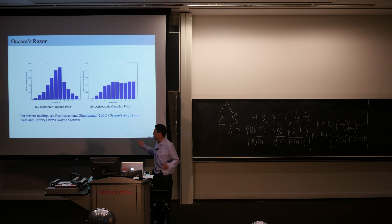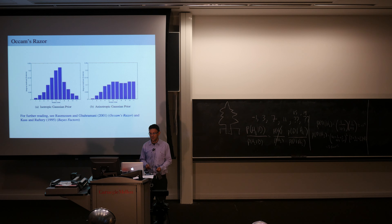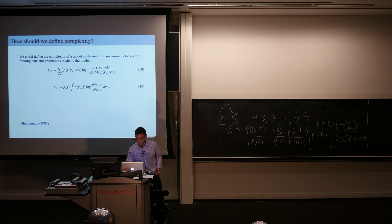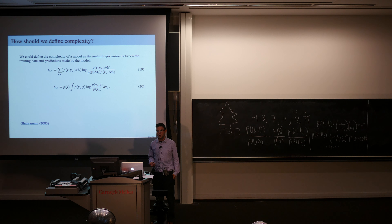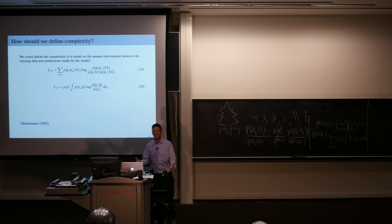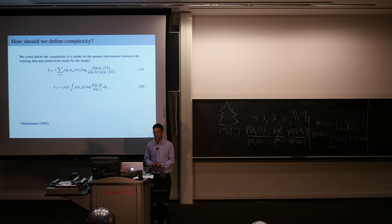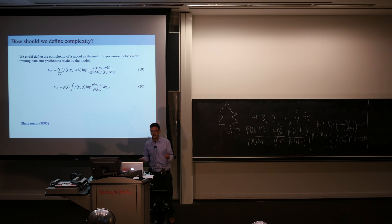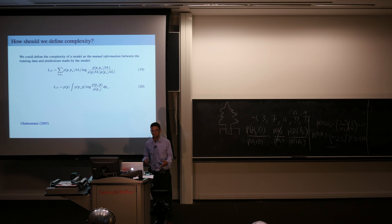Bayesian nonparametric models have an information capacity that scales with the number of data points — the number of meaningful parameters scales with available information. Early in the summer school, Alex mentioned we want big models for big data, and Bayesian nonparametric models seem very suited to this. Zubin Ghahramani has discussed using mutual information between training and test predictions under a model to define its information capacity, which might be an interesting way to motivate model development and define complexity.